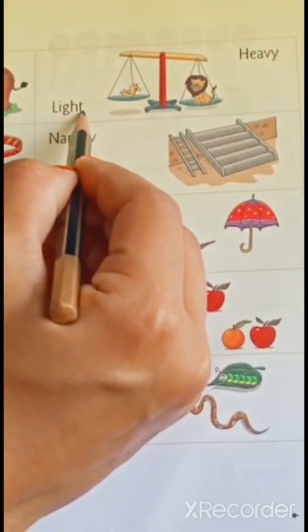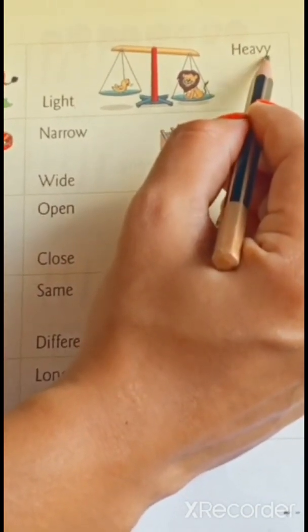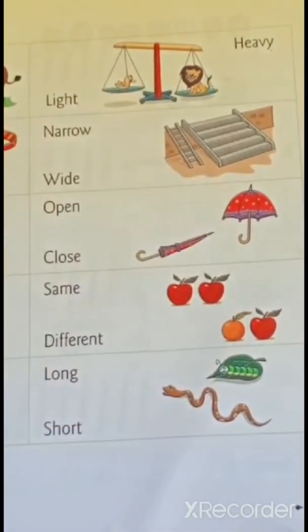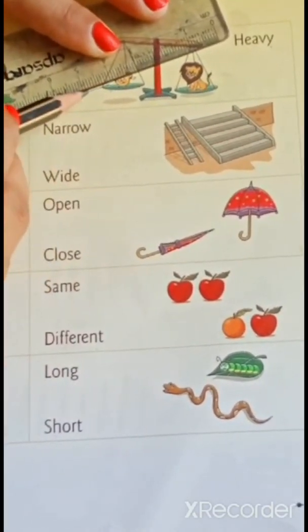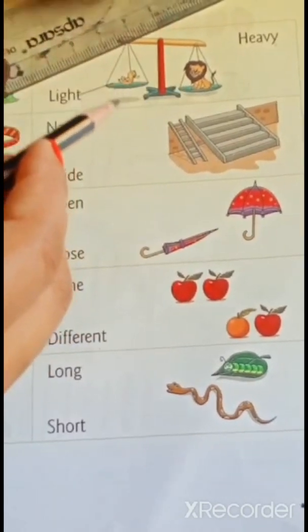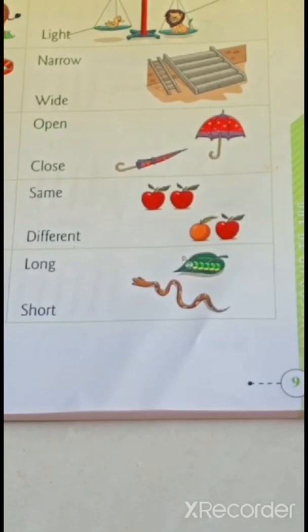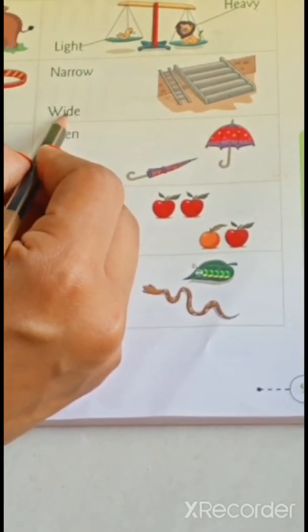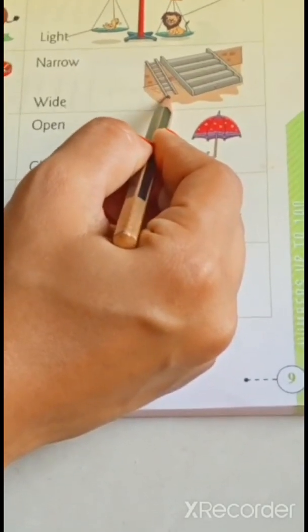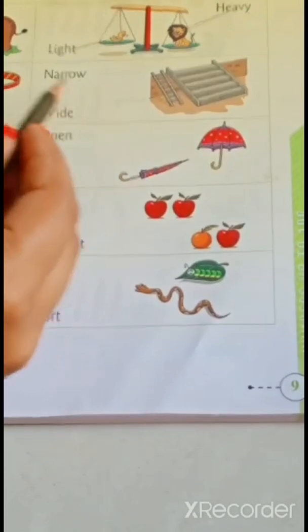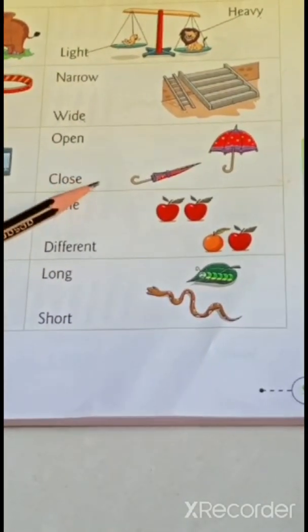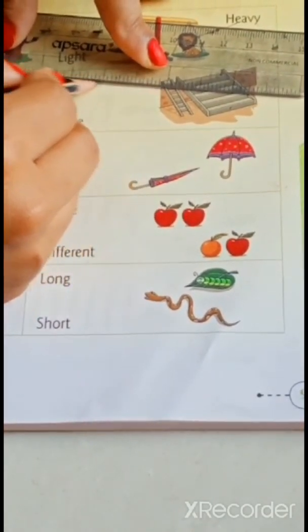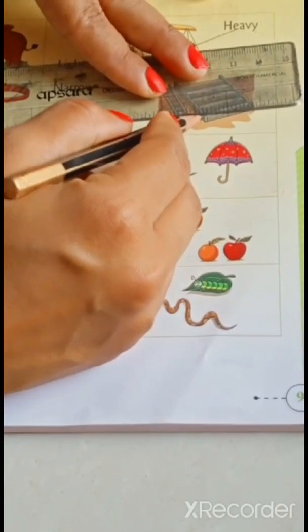Now, next. L-I-G-H-T light and H-E-A-V-Y heavy. So, duckling is light or lion is light? Duckling. Duckling is light. So, join light with duckling. And lion is heavy. So, join heavy with lion. N-A-R-R-O-W narrow and W-I-D-E wide. Here, ladder is given and it is staircase. So, which one is narrow and which one is wide? Narrow. This ladder is narrow. So, join this ladder with narrow. And staircase is wide. So, join like this.